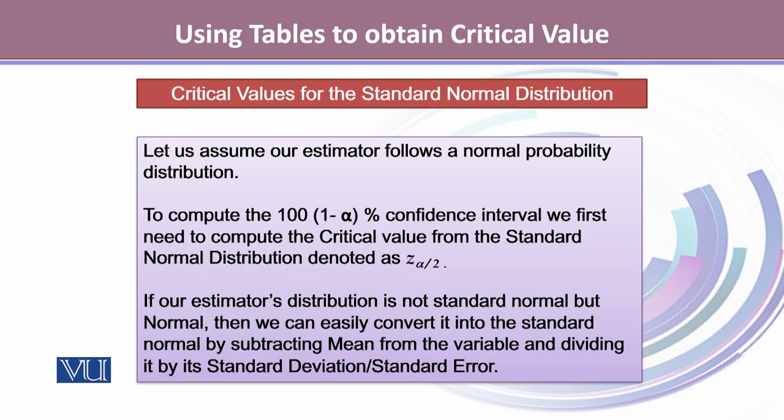For standard normal distribution, let us assume our estimator follows a normal probability distribution. To compute 100 times 1 minus alpha percent confidence interval, we first need to compute the critical value from the standard normal distribution, denoted by Z alpha by 2.